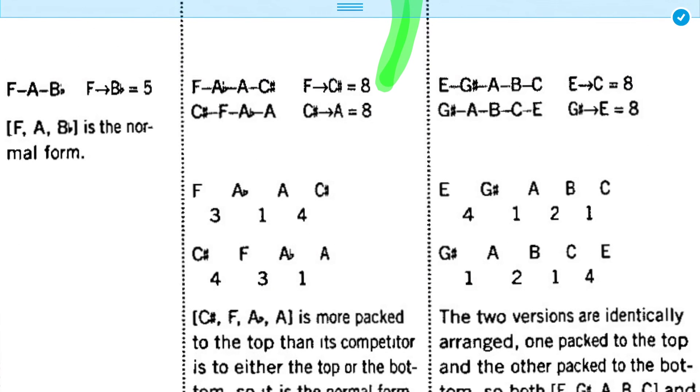So, to break the tie, we have to go on to this next step, comparing the interior intervals of the sets. So, here's F, A flat, A, C. The interval between F and A flat is 3. The interval between A flat and A is 1, and between A and C sharp is 4. Compare that with C sharp, F, A flat, A, where the interval between C sharp and F is 4, F and A flat is 3, and A flat and A is 1.